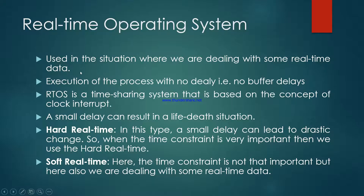Finally, the real-time operating system. The real-time operating system is used in situations where we are dealing with real-time data and execution of processes must happen with no delay. If there will be delay, then we will not use the real-time operating system. It is used only when we need no delay or no buffer delays. As soon as the data comes, the execution of the process should be done immediately. The real-time operating system is a time-sharing system based on the concept of clock interrupt.